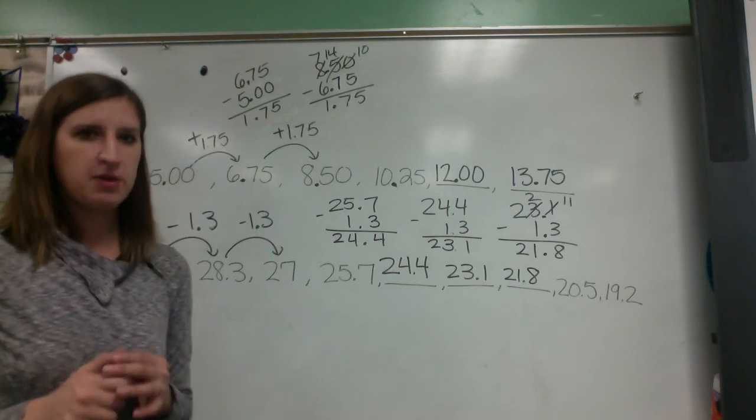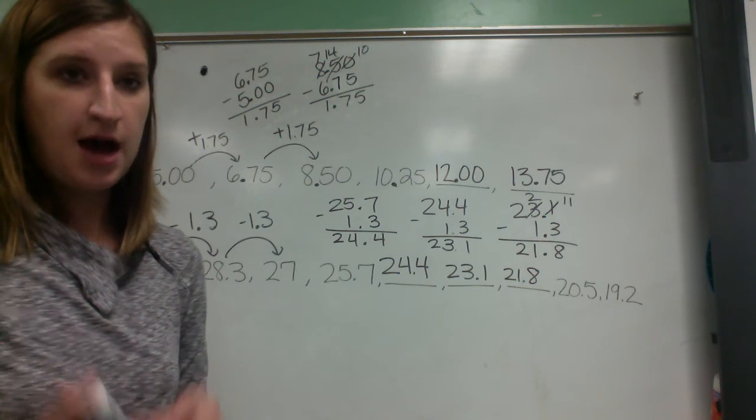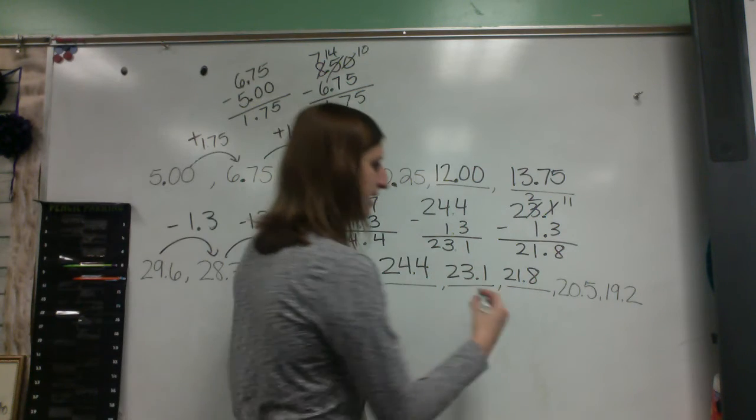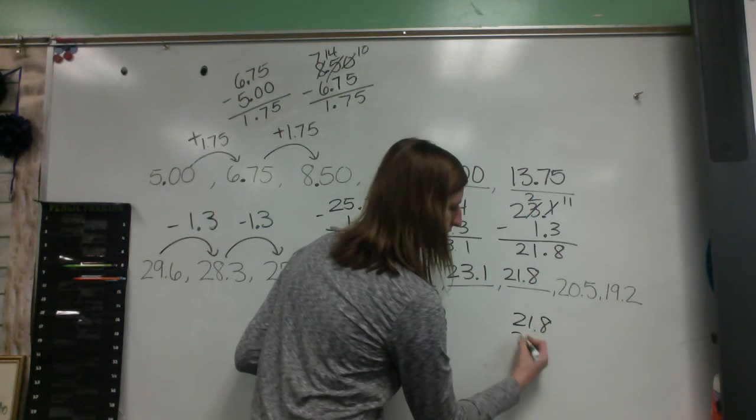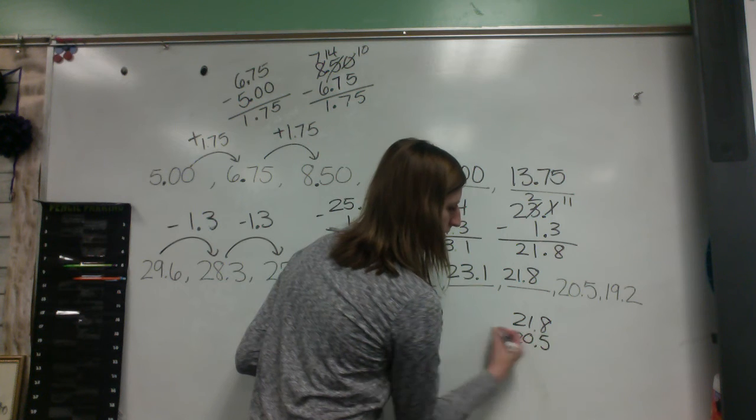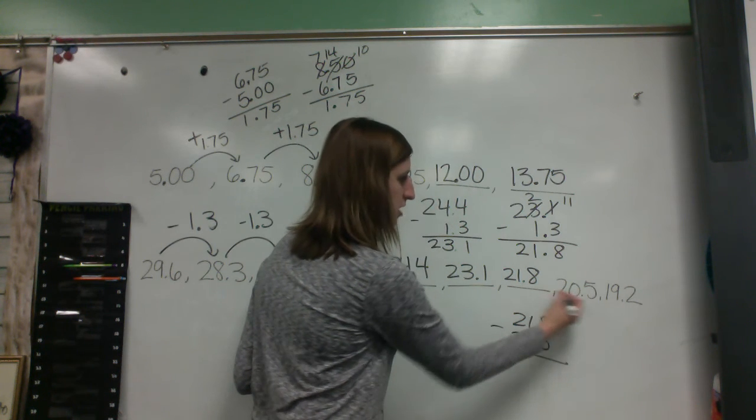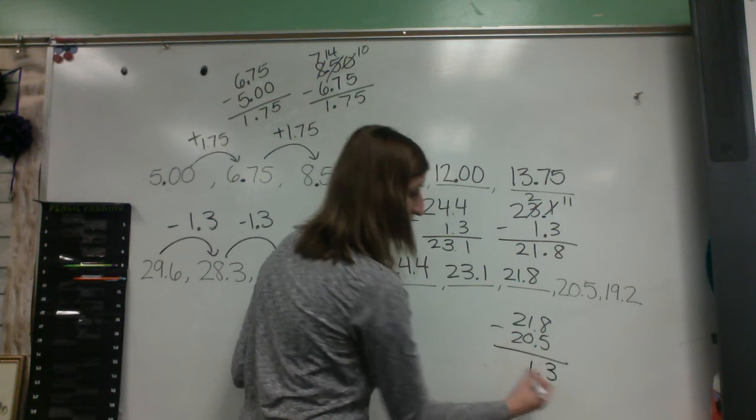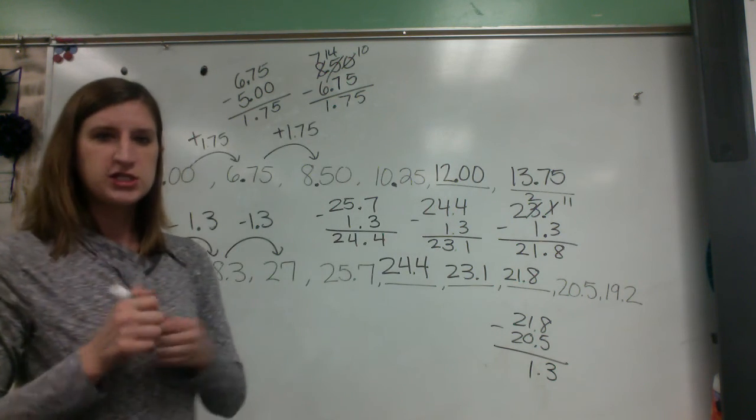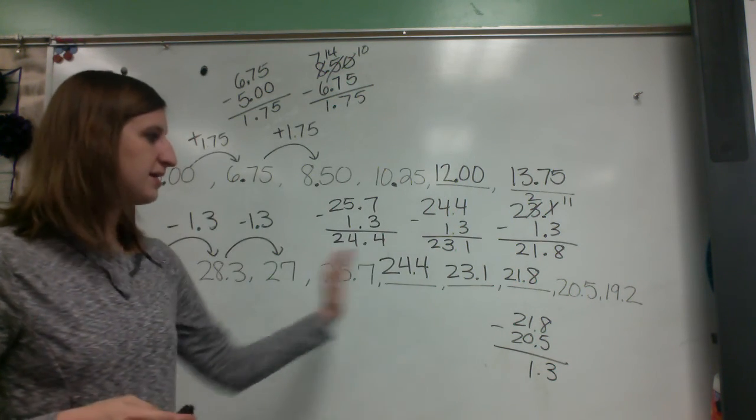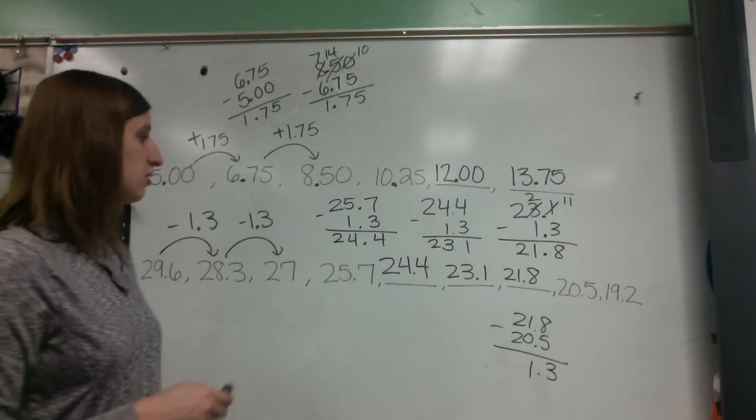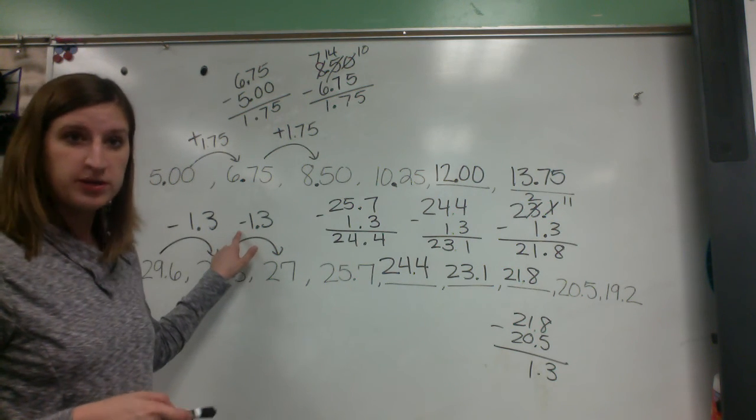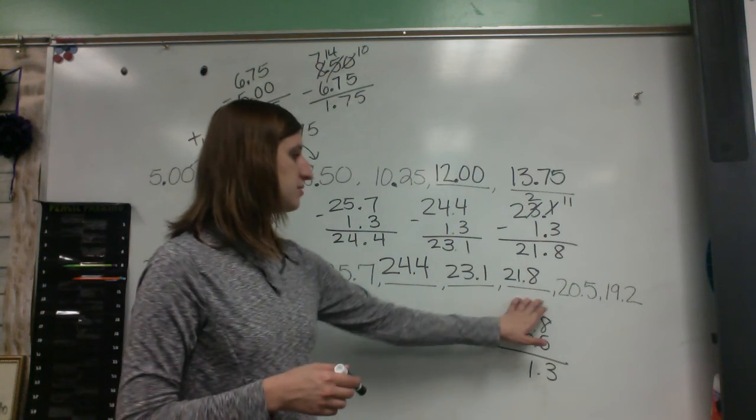Now, if I really want to double check my work and just make sure that I was on the right track, everything's working out great, then I might take the extra second just to double check that this also went down by 1.3, which it did, just to make sure that somewhere in between I didn't mess up. So the rule on this one is subtract 1.3 each time.